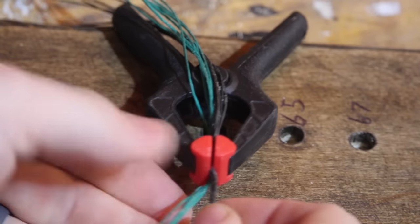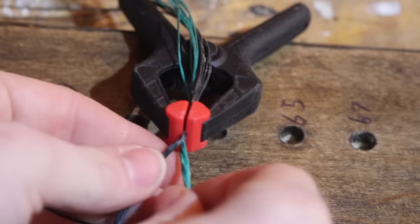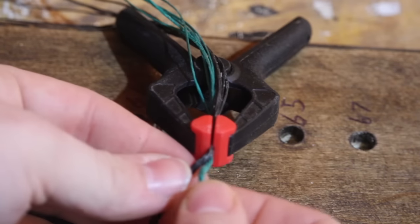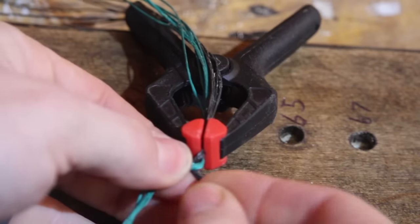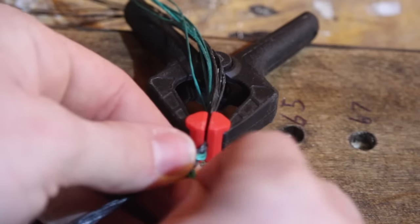And so you're just twisting the strands in one direction but twisting the bundle of strands in the opposite direction and this is what makes the awesome Flemish twist string.